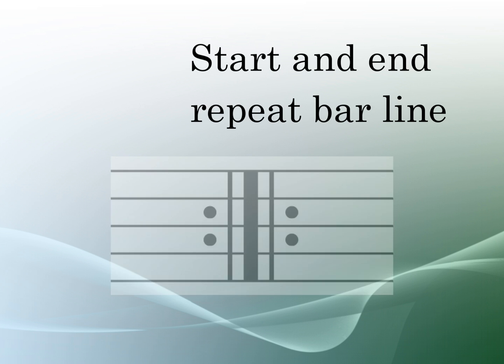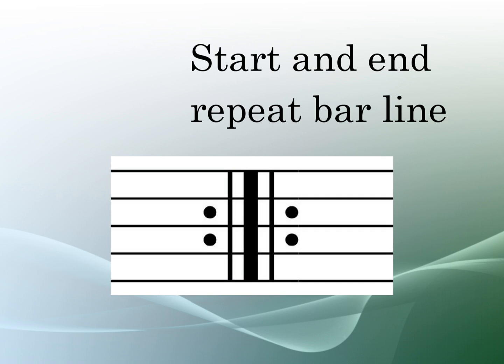A start and end repeat bar line shows that this is the end of a section that should be repeated, and you should find the previous start bar line and repeat that entire section. But also this is the starting point of another repeated section.